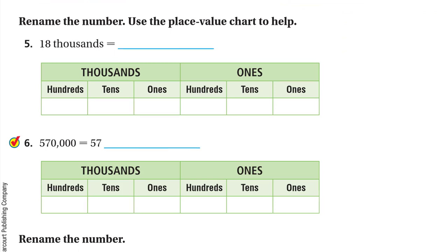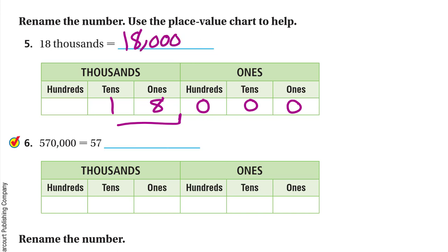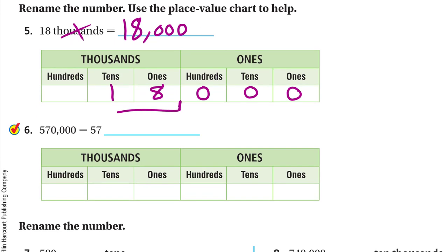Rename the number using the place value chart. For 18 thousands, write 18 at the thousands column — so 8 in the thousands place and 1 in the ten-thousands — with zeros in the hundreds, tens, and ones. The number is 18,000. A quick way: write 18 and replace the word 'thousands' with three zeros.